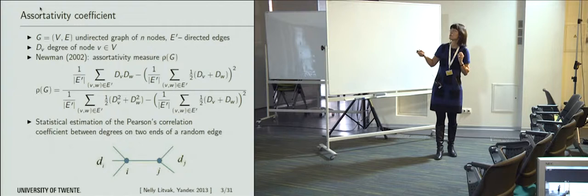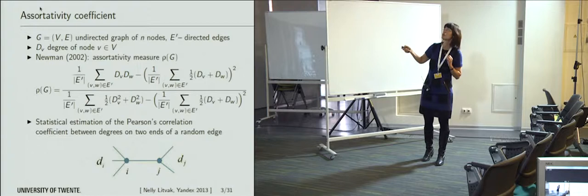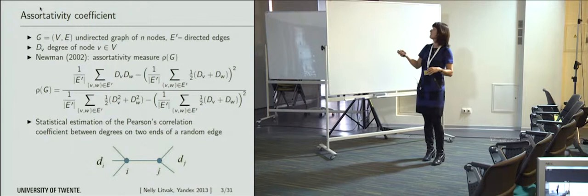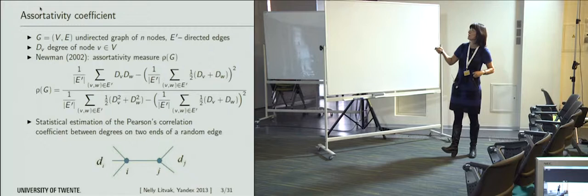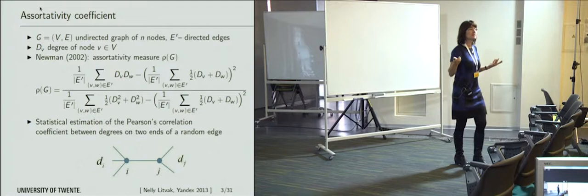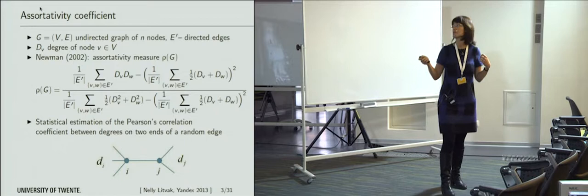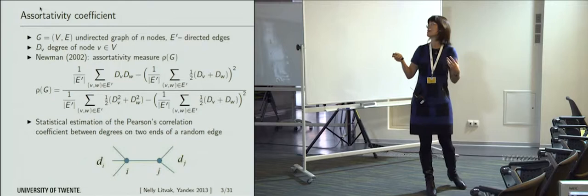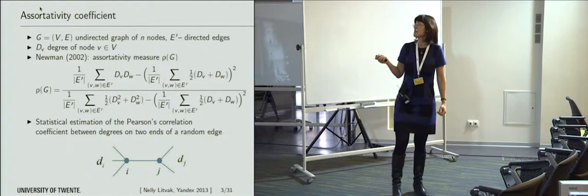Here we have summation over all directed edges — the products of degrees on two sides of each directed edge — and here is the average cross-product of degrees of neighbors. The degrees of nodes all have the same distribution, so here we have the expected degree squared, and here the second moment of the degree. We easily recognize the standard Pearson correlation coefficient: covariance divided by variance. Because the distribution of d_v and d_w is the same, you have just variance in the denominator. This is very standard, and we know this measure does reflect dependencies.